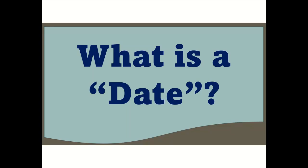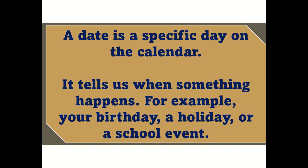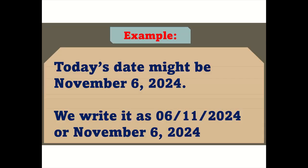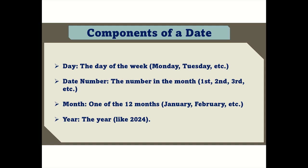What is a date? A date is a specific day on the calendar. It tells us when something happens — for example, your birthday, a holiday, or a school event. Today's date might be November 6, 2024. We write it as the 6th of November 2024, or November 6th, 2024.